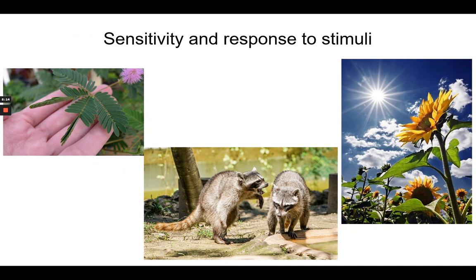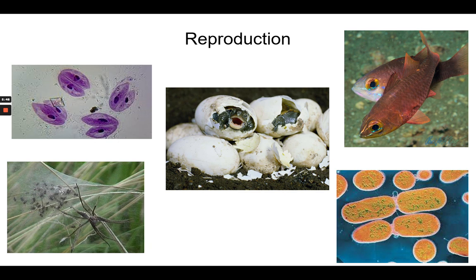Sensitivity in response to stimuli: the picture on the left is a plant that when you touch it, folds its leaves inward — it responds to the stimuli of being touched. Sunflowers actually move their seed head to track the sun across the sky. We also have young raccoons here that are fighting — another response to stimuli. Reproduction: all things reproduce, either asexually, like bacteria and paramecium, or sexually, where a male and female parent's gametes join to form new embryos that grow to adults. Spiders, turtles, and fish all reproduce sexually.